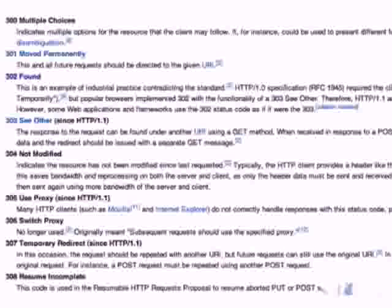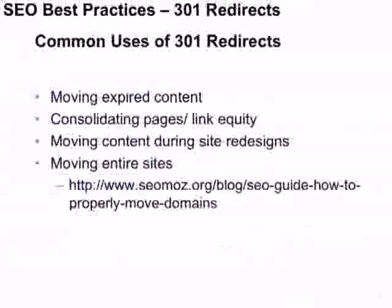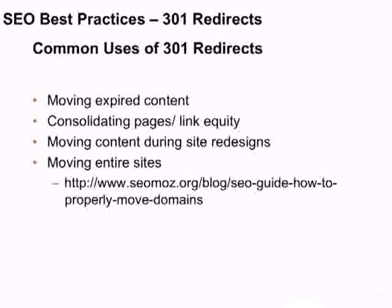If you'd like to know about the rest of the 300 redirects, the response codes are available from Wikipedia — moved permanently versus found versus not modified, etc. Best practices for 301 redirects: use this for any expired content. If you run a job board and the job expires, if that job post page has some links, you want to preserve that and redirect up to the appropriate category level. If you're moving entire sites, look up a guide — we have one at SEOmoz which is very good. If you're moving content during site redesigns, you'll definitely want to use 301 redirects through that process, doing it effectively so you only have to do it once.